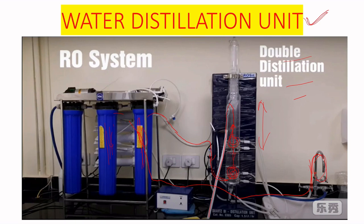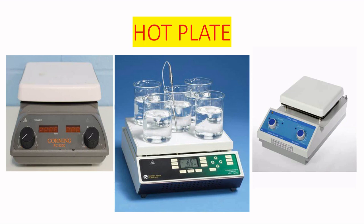The next equipment is the hot plate, used for media that cannot be autoclaved because certain elements in the media are heat-sensitive or cannot withstand autoclaving pressure. This type of media is sterilized using the hot plate method, where the media is heated to boiling at around 100°C and then used for inoculation with microorganisms.